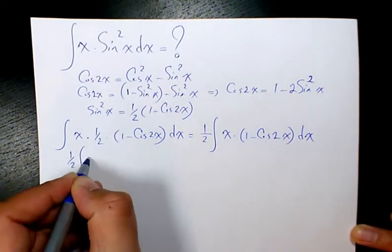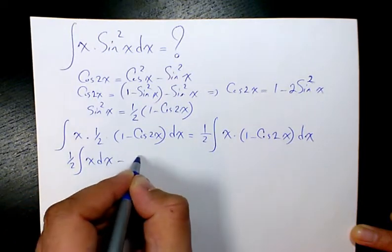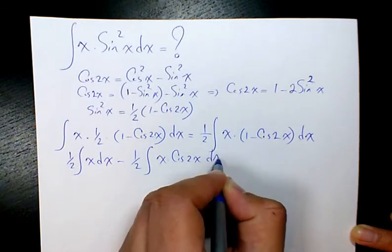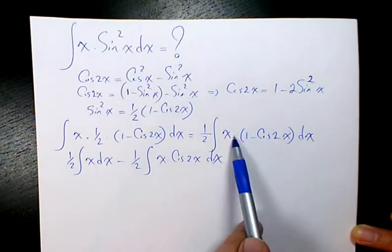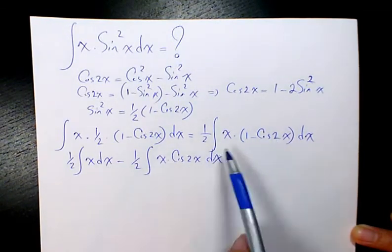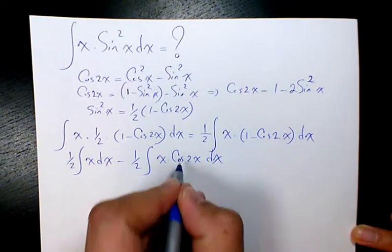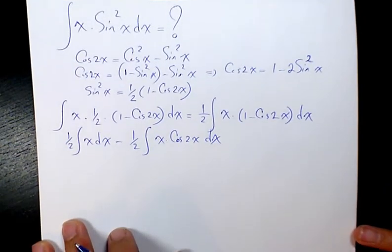It's going to be 1 over 2 x dx minus 1 over 2 x cosine 2x dx. So basically I distributed and then separated x and x times cosine 2x.